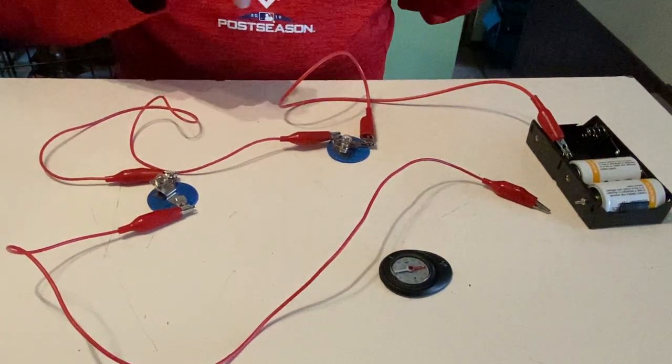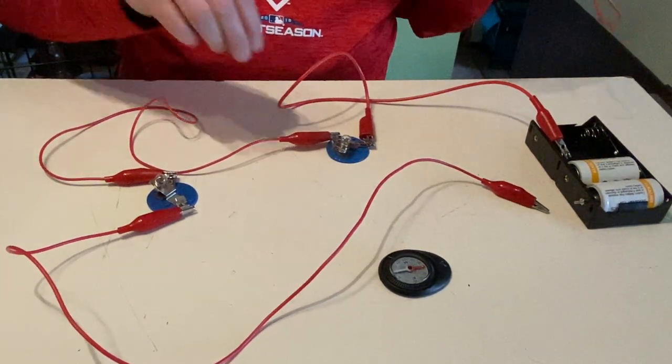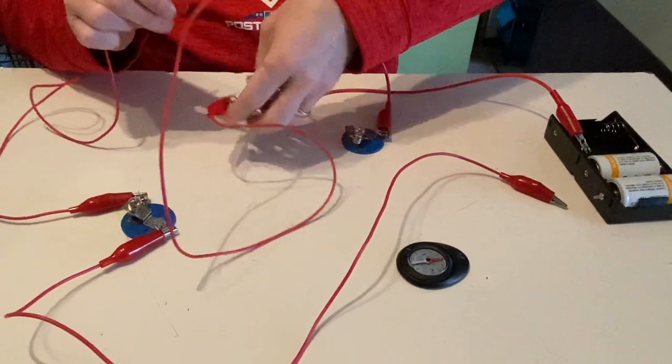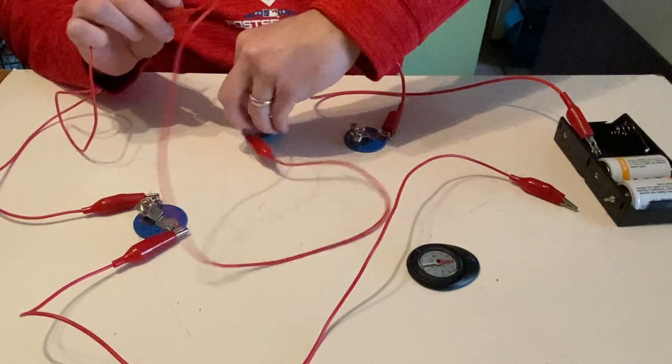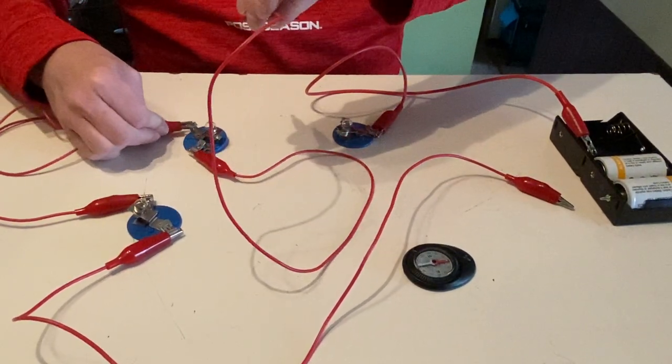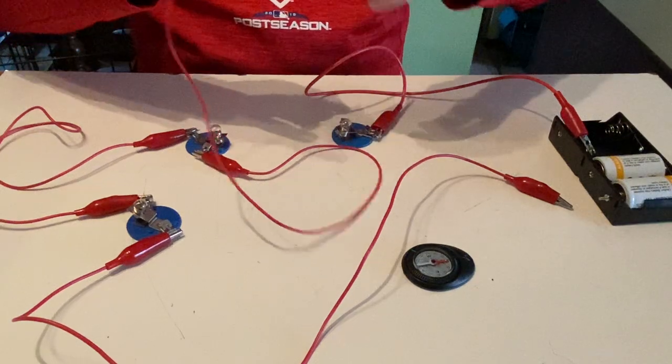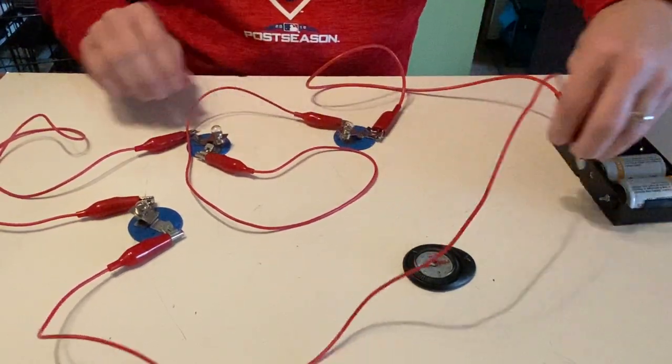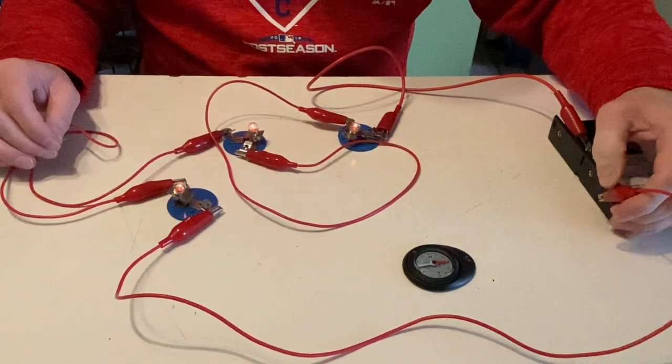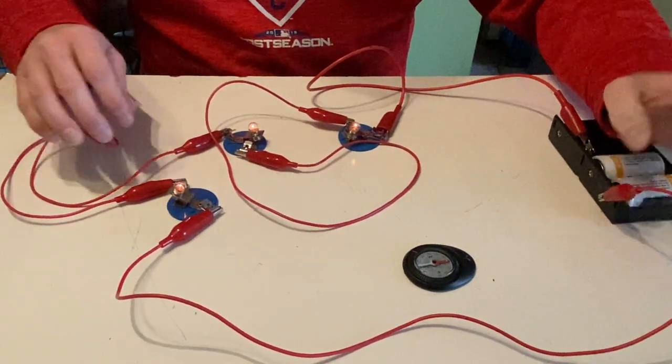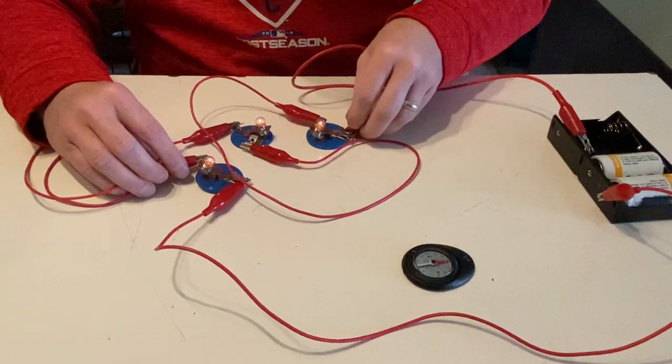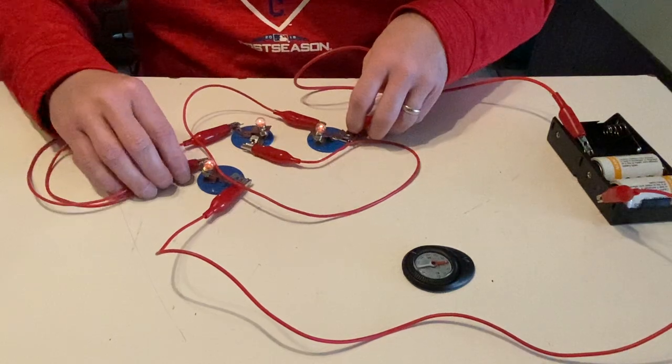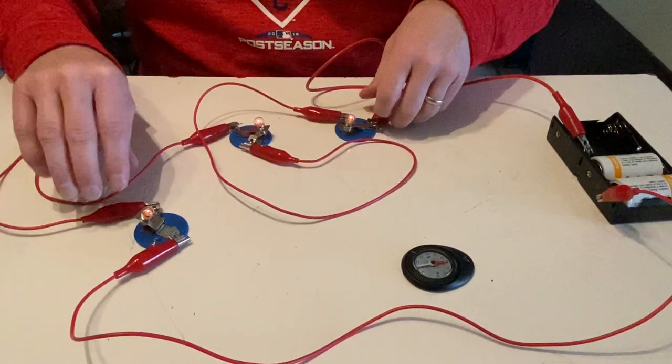And now what if I add in a third bulb into this loop? So checking brightness, these bulbs are all really, really dim. So each time I added a bulb, the bulbs all got dimmer.